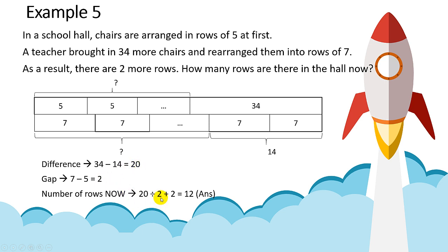So 20 divided by 2 gives you 10. Note that 10 is not the final answer — the question asks for the rows in the hall now. So you take 10 rows plus the two more rows, and the answer is 12 rows of chairs.